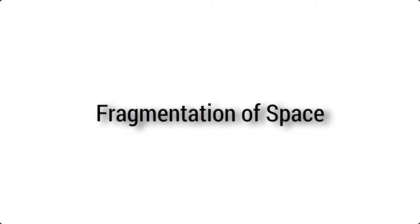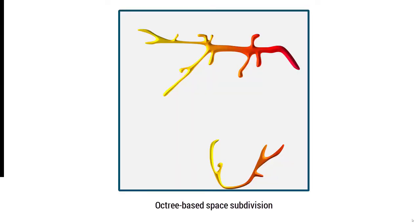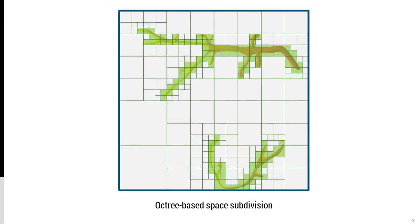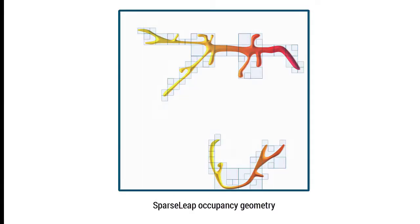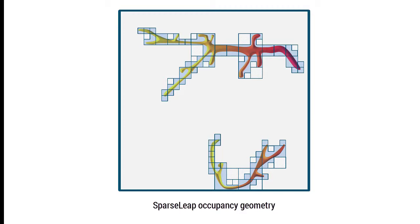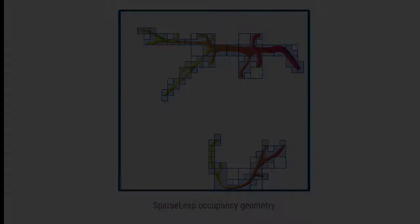Looking at the fragmentation of space in more detail, we can see that in octree subdivision, small non-empty nodes break up the space around them into many small empty nodes. In contrast, the occupancy geometry of SparseLeap fragments space very little, shown here by the few empty boxes around non-empty boxes.